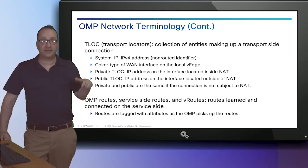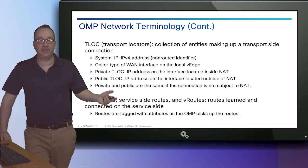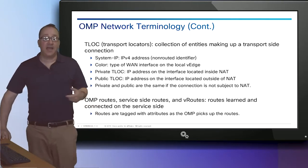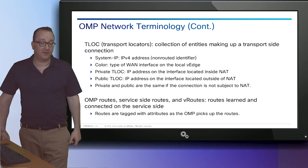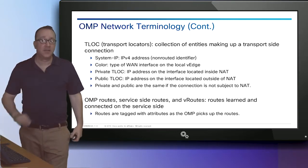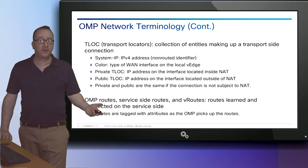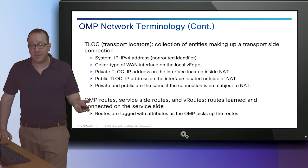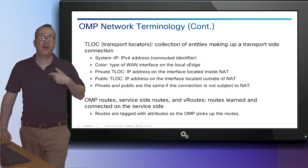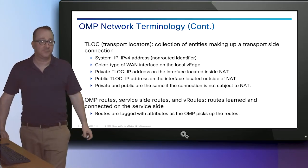We don't use an interface IP address to denote a TLOC because IP addresses move, change, and get DHCP assignments. Instead, we use a system IP address to identify a TLOC, ensuring that a transport endpoint can always be identified regardless of what IP address is currently assigned to the device. This system IP is a non-routable identifier — it's a 32-bit dotted decimal that looks like an IP address, but it's just the identifier for that tunnel.